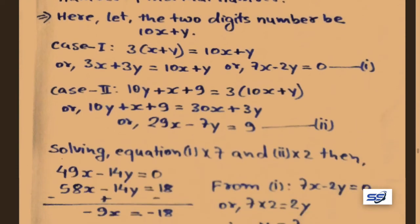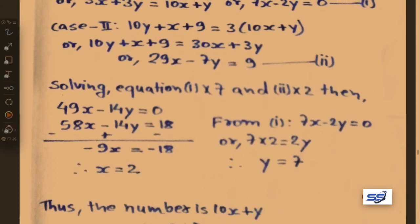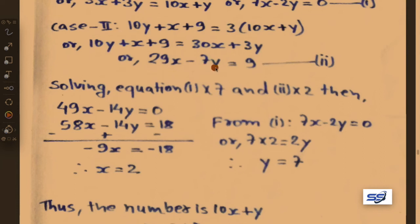To solve both equations, multiply equation 1 by 7: 49x minus 14y equals 0. Multiply equation 2 by 2: 58x minus 14y equals 18.